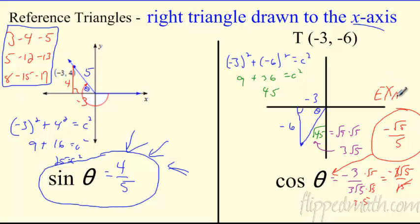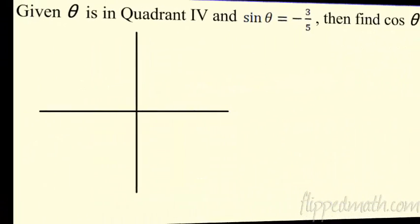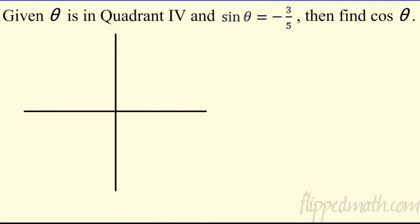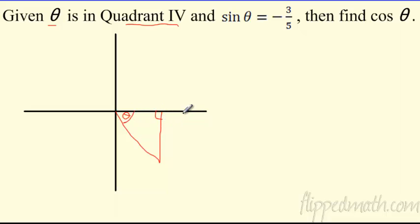Let's do one more. Here theta is in quadrant four with a given sine value. Draw the reference triangle in quadrant four — it can be rough, doesn't have to be to scale — with theta touching the x-axis. Sine is opposite over hypotenuse, so it's 3 over 5. The opposite side is 3, hypotenuse is 5.